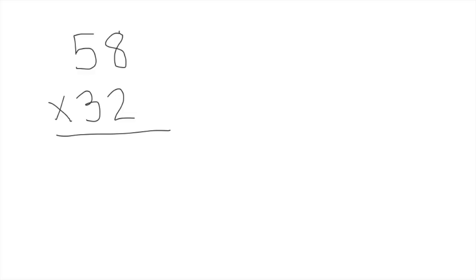The first thing you want to do is look at each of your factors. In this case, we've got 58 times 32, and all you need to do is round each of those factors to the greatest place. 58, of course, will round to 60, and 32 rounds to 30.